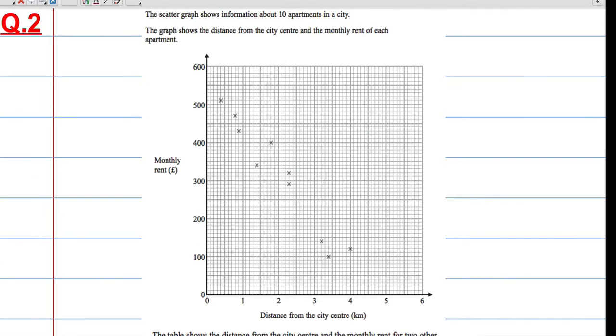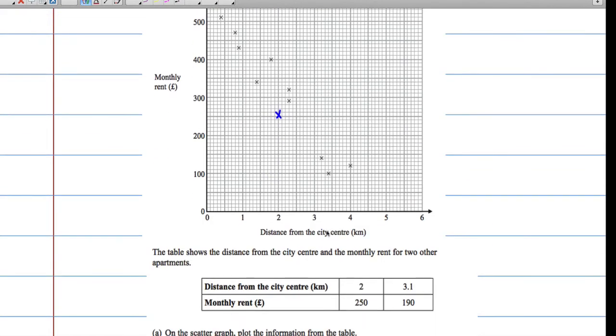If the distance is 2, the monthly rent should be 250, so 2 up to 250, plot your point there. That's one. And then at 3.1 and 190, so that's 3, that will be 3.5, so that must be 3.1.